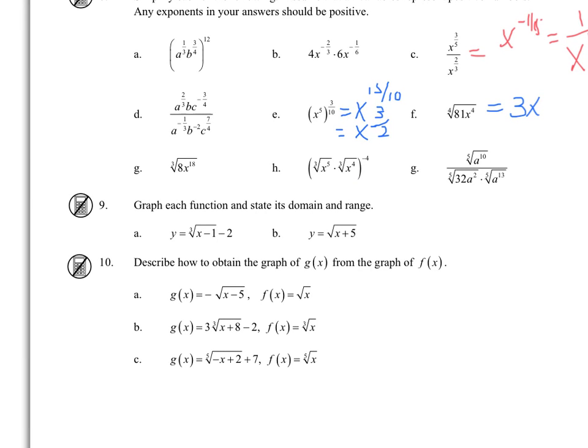For g, what times itself 3 times is 8, is 2. And then for the variable, 18 divides by 3, and we get x to the 6th.